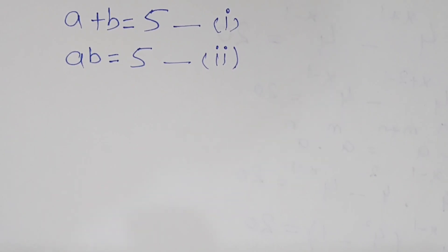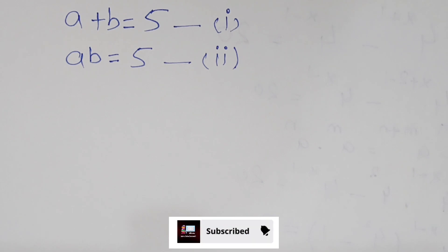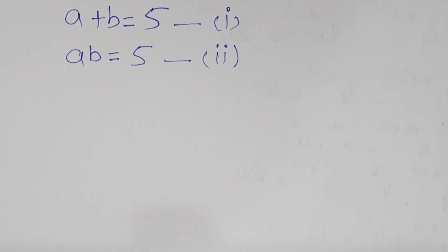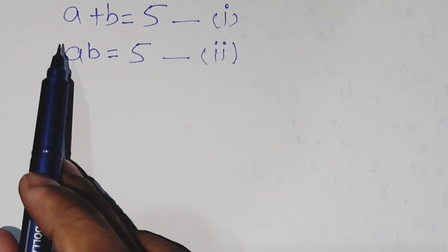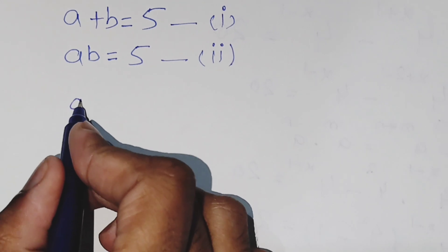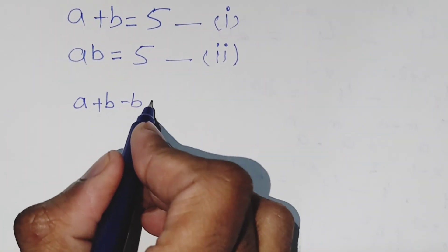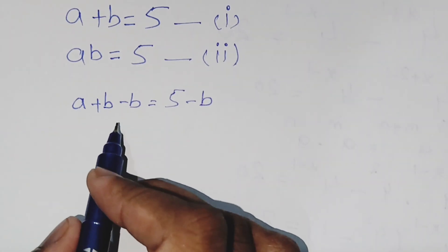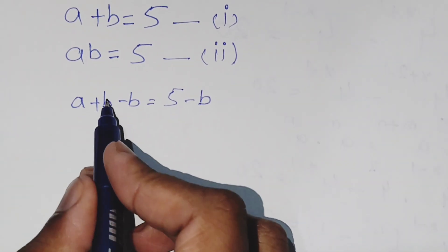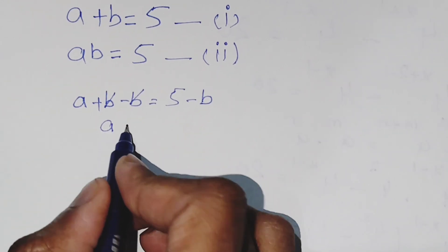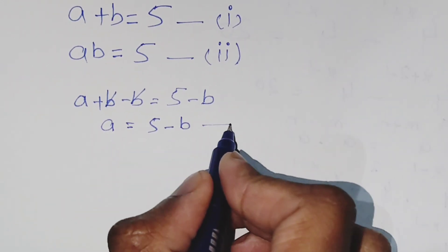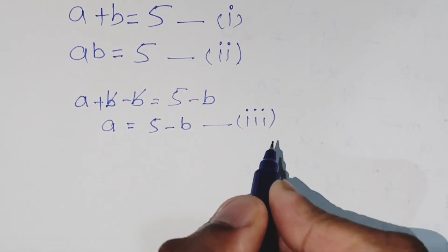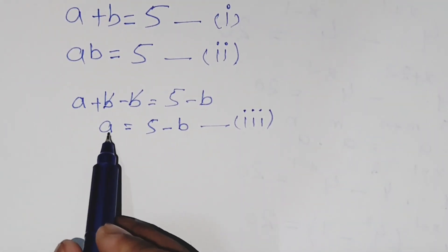Hi everyone, welcome to the new video. Today we'll solve the problem having two equations: a plus b equals 5, and ab equals 5. We have to find the value of a and b. From equation 1 we can write a plus b minus b equals 5 minus b — we subtract b on both sides — so we get a equals 5 minus b. This is our third equation.